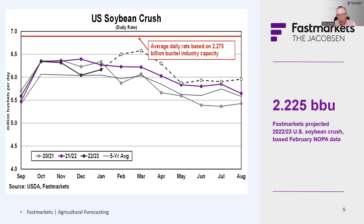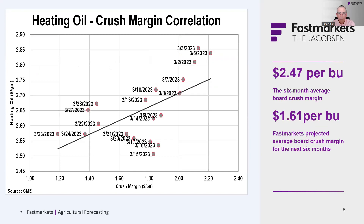Part of the reason soybean oil prices have moved lower is a short-term supply overhang, concerns about an economic slowdown or banking crisis, and a big drop in energy prices — all coming together. The question is what's going to happen in the second half of the year. Right now meal demand is firmly driving crush, but there's also a question of whether we'll have enough soybeans to crush if we switch into a mode where we're crushing for oil as opposed to meeting meal demand.